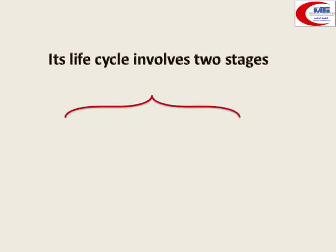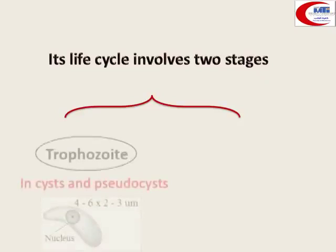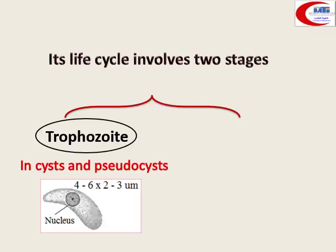The life cycle involves two stages. The first stage is the trophozoite, which can be inside a pseudo cyst or inside a true cyst, as we said.